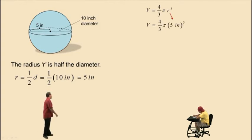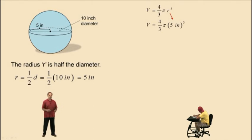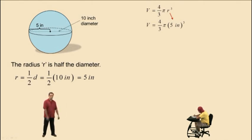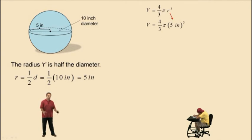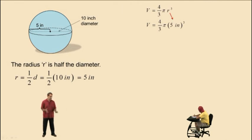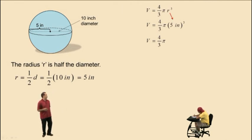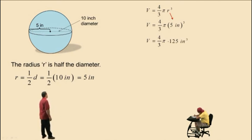Let's replace r with 5 inches. Notice we have 5 inches cubed — that means 5 inches times 5 inches times 5 inches. 5 times 5 times 5 is 125, and inches times inches times inches is represented as inches cubed. That makes sense because volume is 3 dimensions. So we have 125 inches cubed.